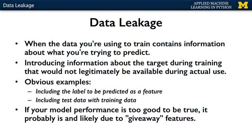In data science, the term data leakage — sometimes just referred to as leakage — describes the situation where the data you're using to train a machine learning algorithm happens to include unexpected extra information about the very thing you're trying to predict. Basically, leakage occurs any time that information is introduced about the target label or value during training that would not legitimately be available during actual use.